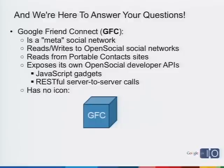Friend Connect is what I like to consider a meta-social network. It takes a lot of social networks — mostly open social networks — and reads and writes to them. It can also read from portable contact sites and aggregates all this data into its own social network. On this platform, it exposes a set of APIs, both client-side and server-side, that let you integrate deeply with your website. Friend Connect has no official icon, so I just used a blue box with GFC.